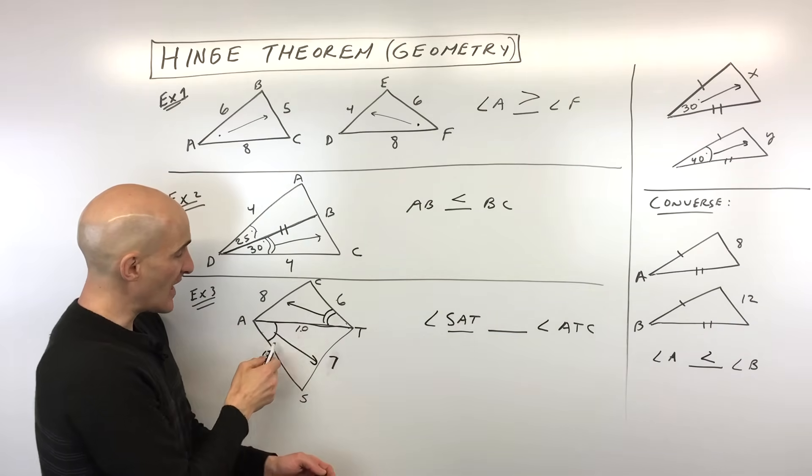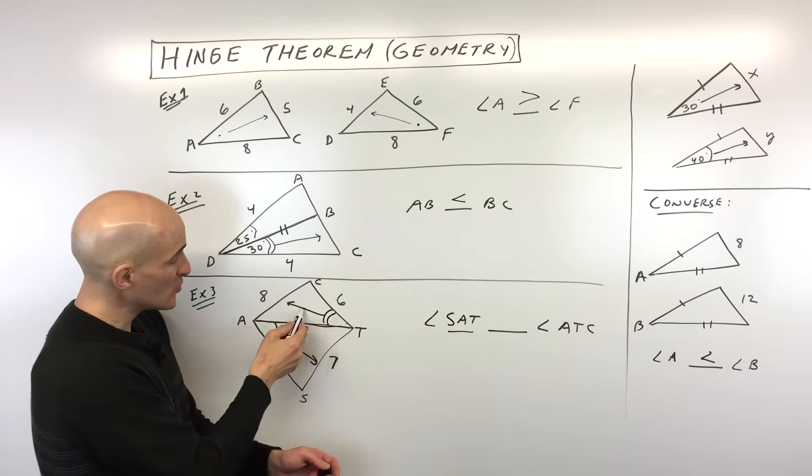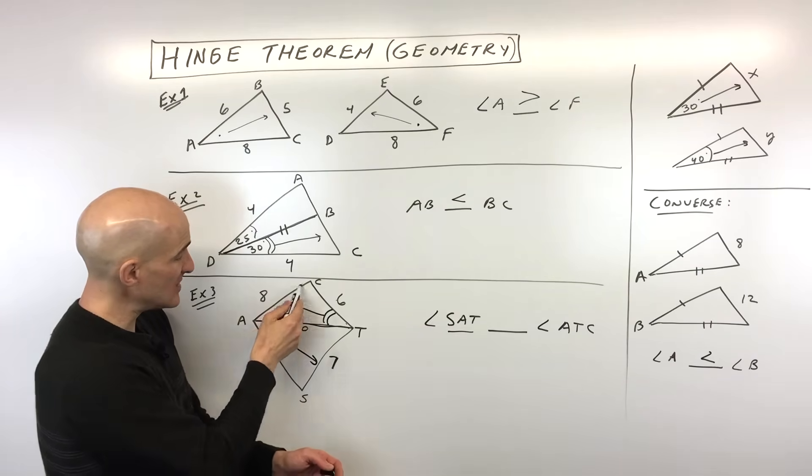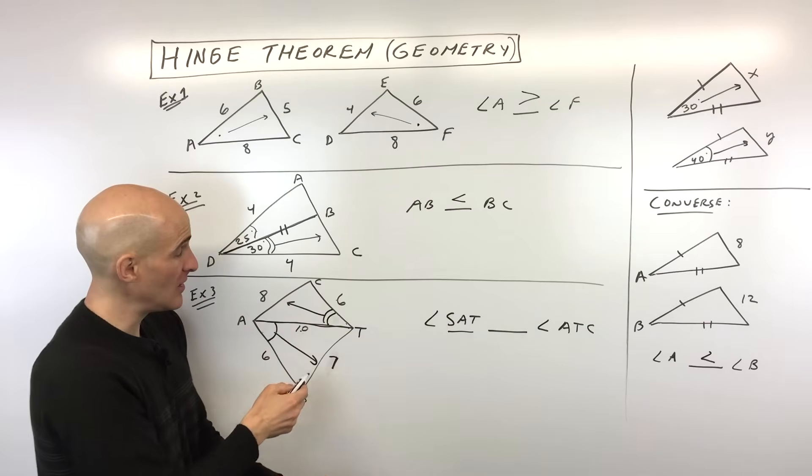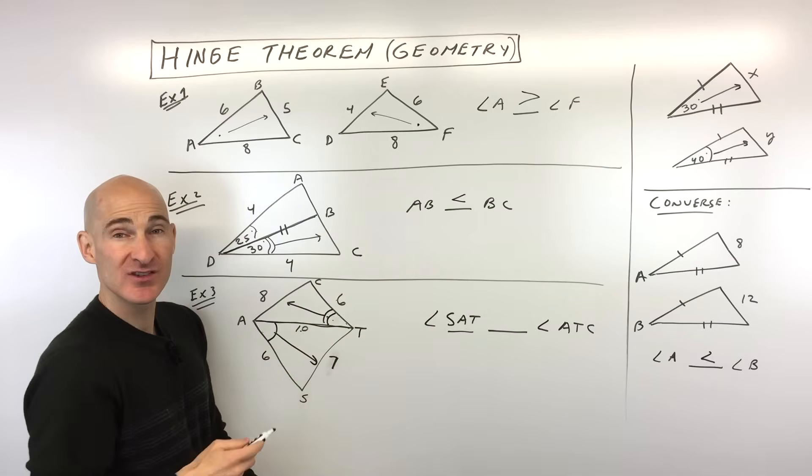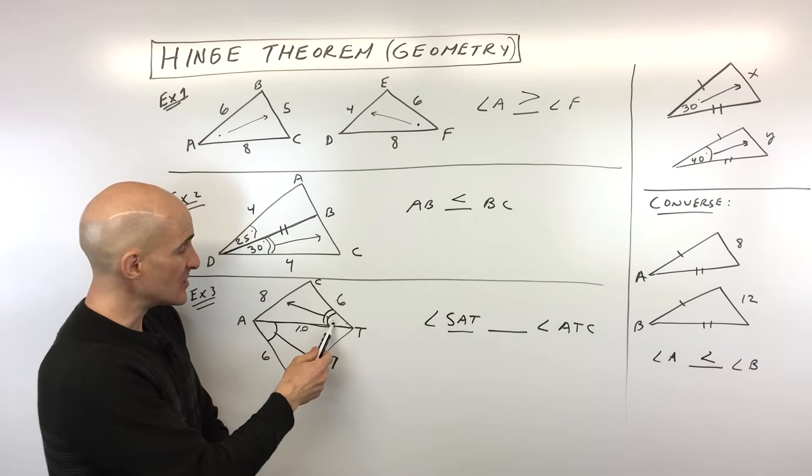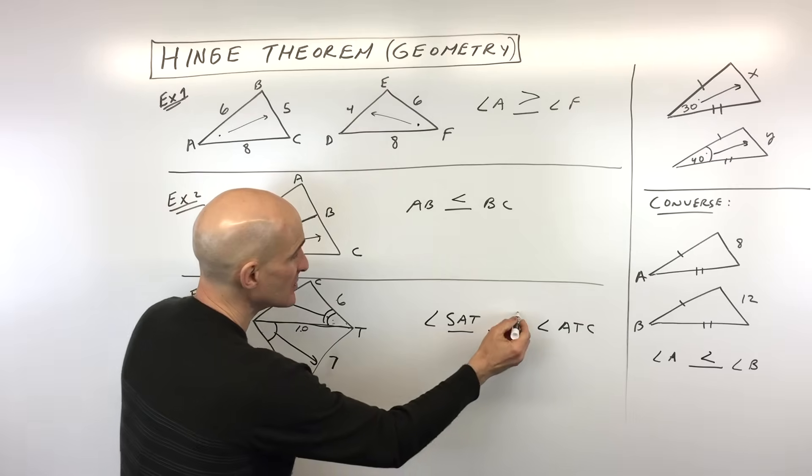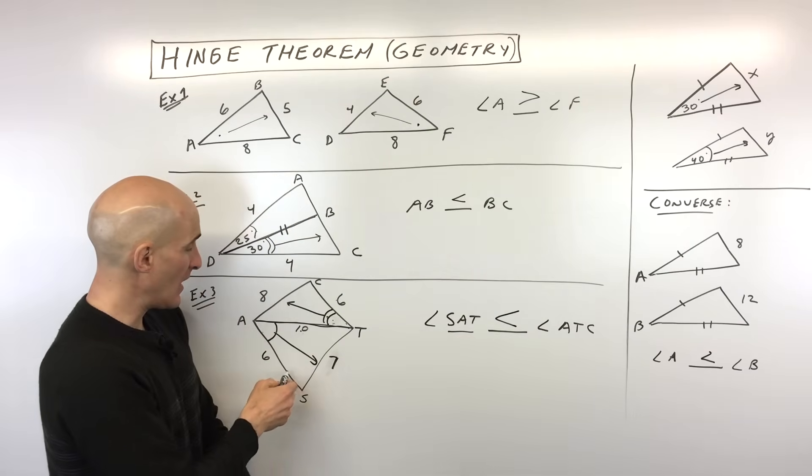But again, notice you have those two sides, they're congruent. But what's different is the angle in between. Here what we're doing is we're looking across from the angle, and you can see that 8 is longer than 7, which means that this angle has to be opening wider, right? So this is the converse of the hinge theorem. And you can see that this is going to be ATC is going to be greater than angle SAT.